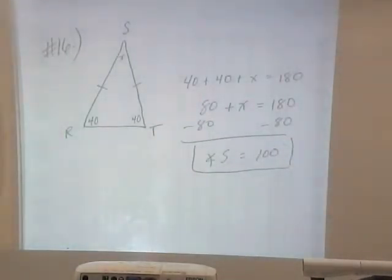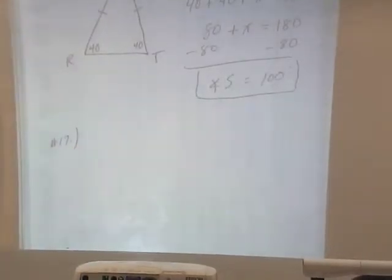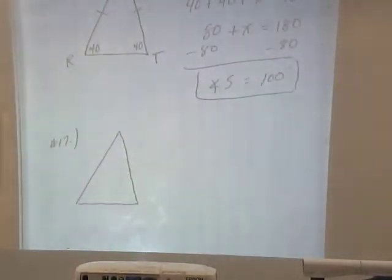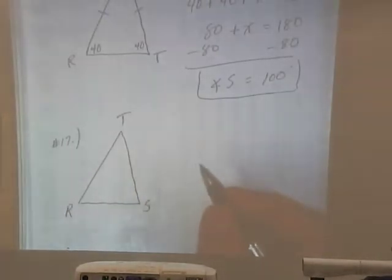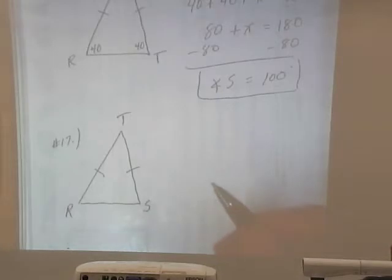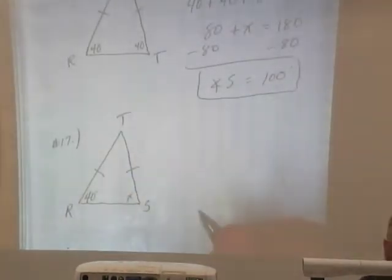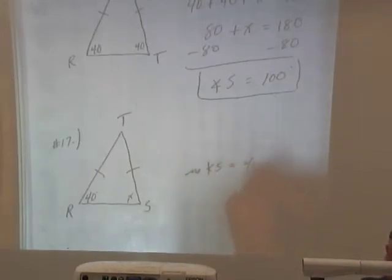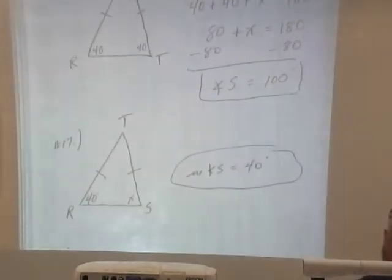Questions on number 16. Okay, number 17. Given triangle RST is isosceles. Once again, T is mentioned twice. So R and S. If the measure of angle R is 40 degrees, find the measure of angle S. Okay. Those are base angles. They've got to be congruent on an isosceles triangle. So the measure of angle S is also 40 degrees.